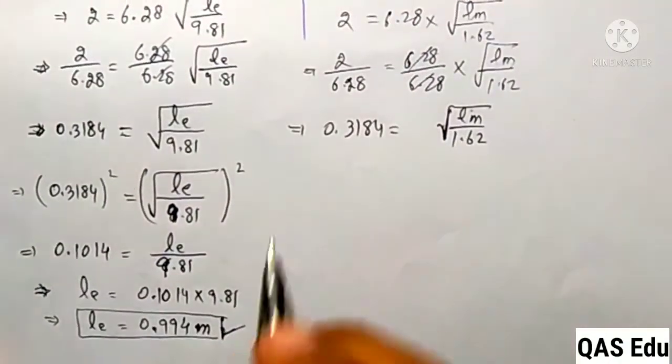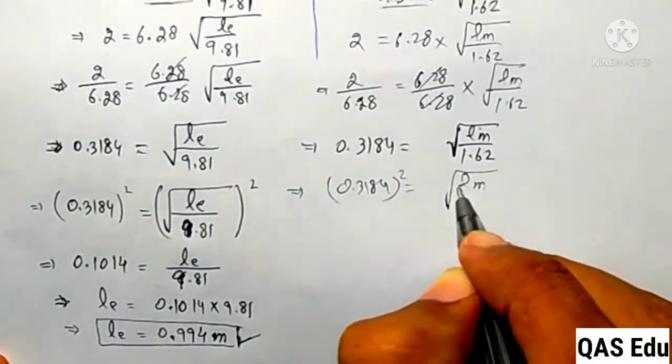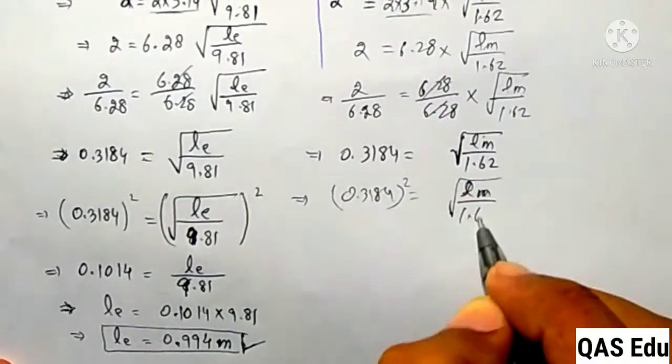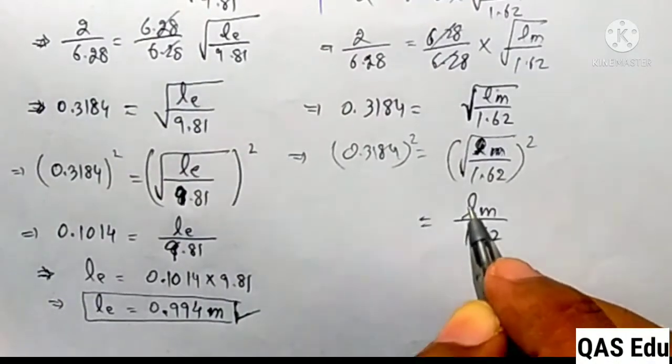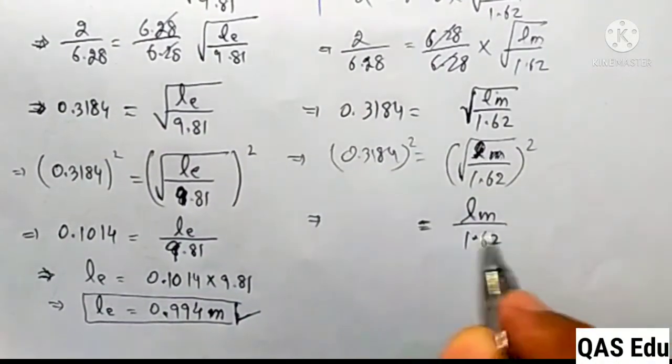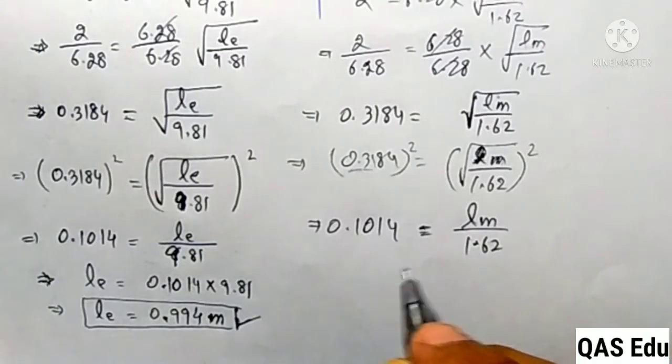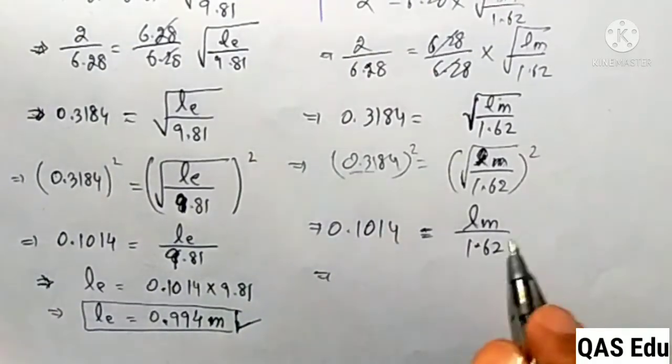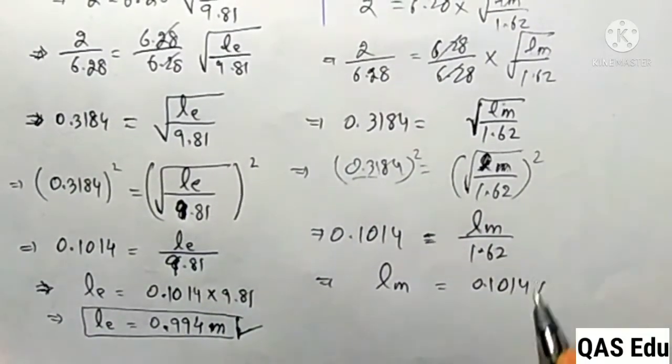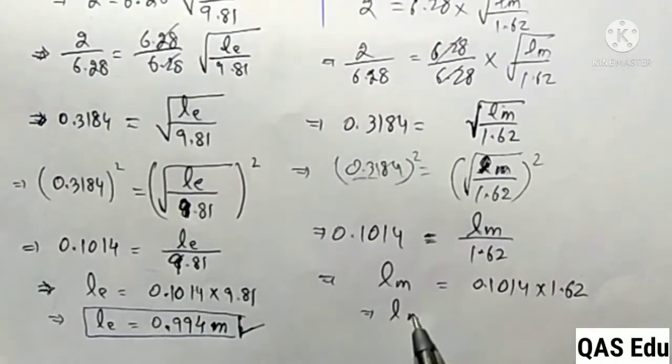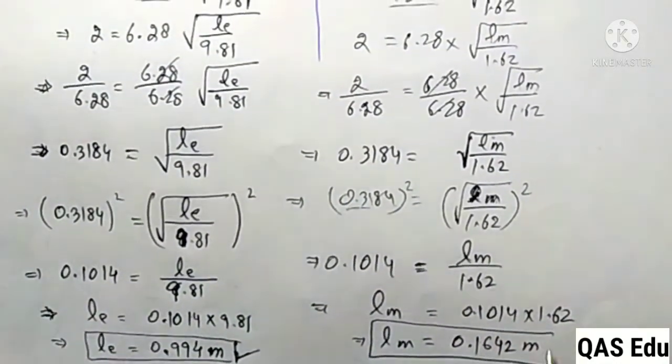(0.3184)² = Lm/1.62. So 0.1014 = Lm/1.62. Therefore Lm = 0.1014 × 1.62. The length on the Moon Lm = 0.1642 meters.